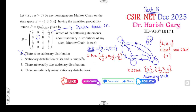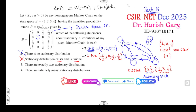Now we have two stationary distributions. A unique stationary distribution does not exist. Since we have two stationary distributions, any convex linear combination — alpha times the first plus (1-alpha) times the second, where alpha lies between 0 and 1 — is also a stationary distribution. Because there are infinitely many values of alpha, there are infinitely many stationary distributions. So option D is the correct answer.